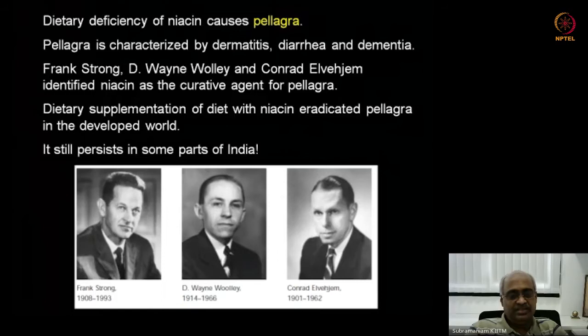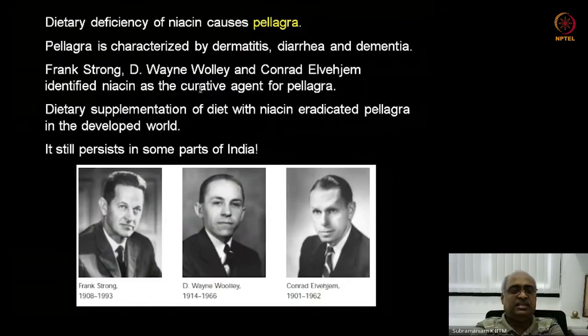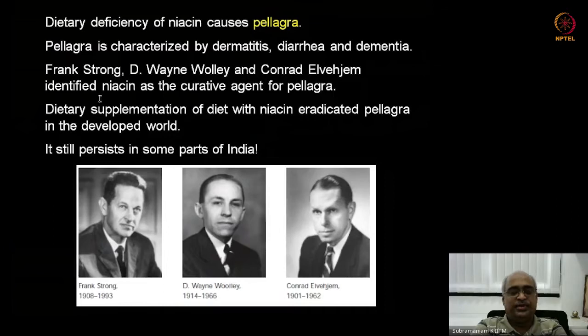Pellagra is characterized by skin abnormalities — rough skin (the Italian word for that is pellagra), diarrhea, and dementia. These three symptoms characterize pellagra, which is caused by niacin deficiency. A lot of people used to die from pellagra, particularly in parts of the world dependent on corn. Three scientists identified the deficient nutrient as niacin, which is a very inexpensive molecule easily supplemented in the diet.